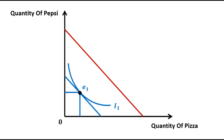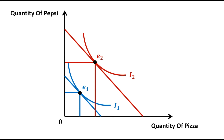The question is: why has there been a parallel shift? Because there has been no change in the relative prices of the two goods. The slope of the new budget constraint is the same as the slope of the initial budget constraint. The new optimum is achieved at point E2.